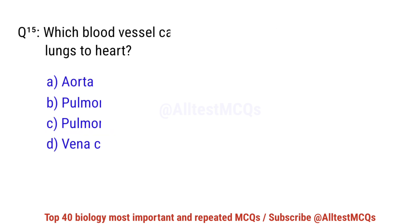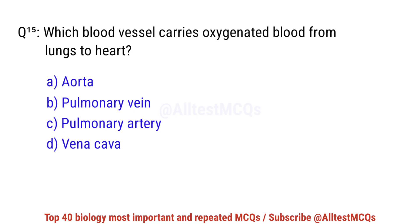Question number 15. Which blood vessel carries oxygenated blood from the lungs to the heart? The correct option is B: Pulmonary vein.